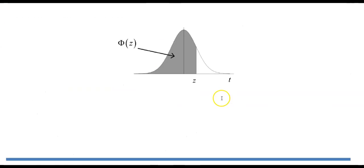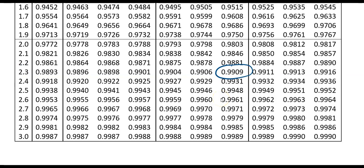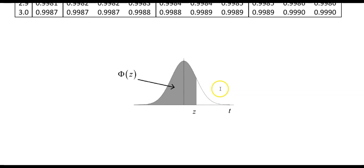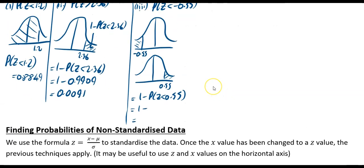It's going to be 1 minus something which we're about to find. We go up to the tables again to look for 0.55. There's your 0.5, then 0.55. We need another 0.05, and that will take you to 0.7088. That's what we're going to put in: 1 minus 0.7088, which equals 0.2912.